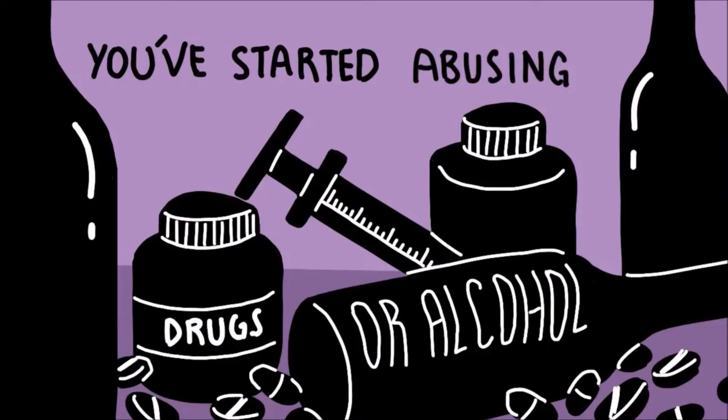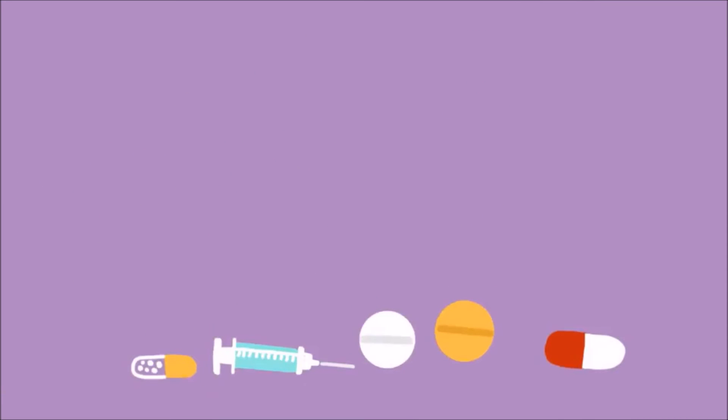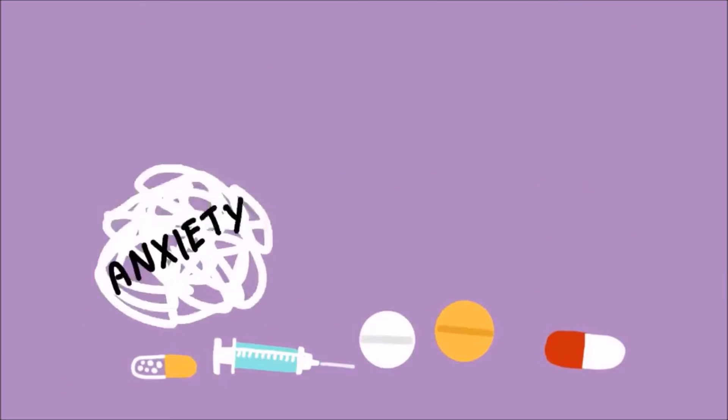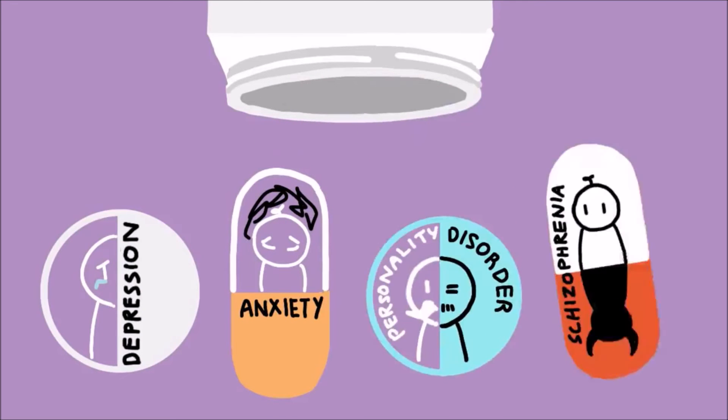Number 8: You've started abusing drugs or alcohol. According to mentalhealth.gov, 1 in 4 or 25% of people who live with the symptoms of a mental illness use alcohol or drugs to self-medicate things like anger, anxiety, or mania. Experts believe individuals who suffer from depression, anxiety disorders, personality disorders, or schizophrenia are more likely to use drugs and alcohol as a coping mechanism than people diagnosed with other mental illnesses.